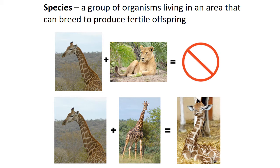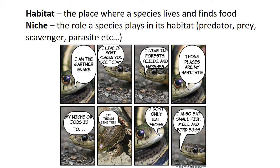A species is a group of organisms living in an area that can breed and produce fertile offspring. In the top position shown, they cannot reproduce, so they cannot be in the same species. The pictures at the bottom show organisms that can reproduce, so they are in the same species. Habitat is the place where a species lives and finds food.